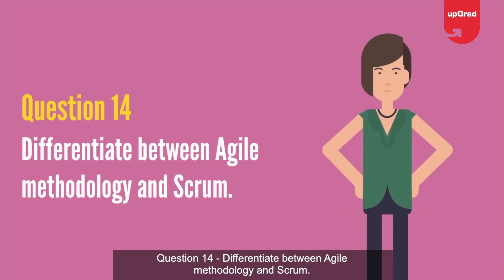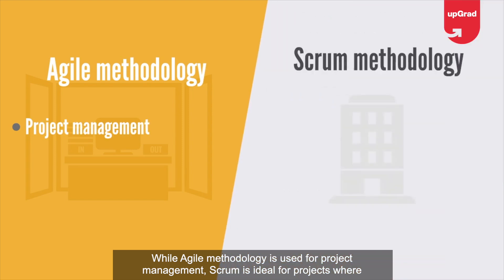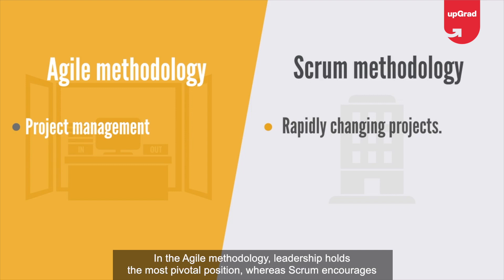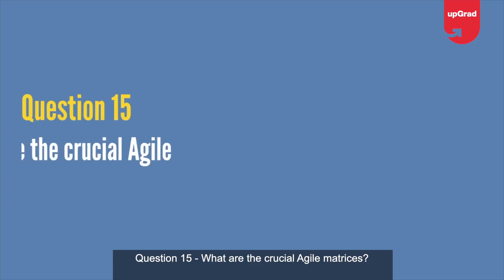Question 14: Differentiate between Agile methodology and Scrum. While Agile methodology is used for project management, Scrum is ideal for projects where requirements change rapidly. In Agile methodology, leadership holds the most pivotal position, whereas Scrum encourages the creation of a self-organizing and cross-functional team.